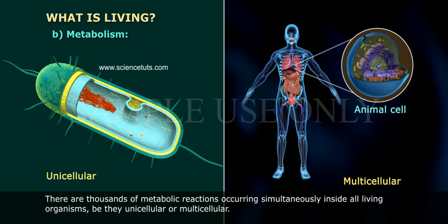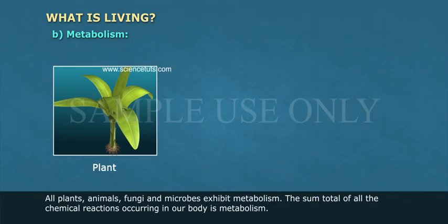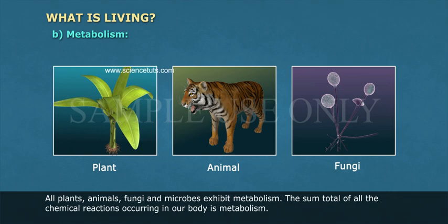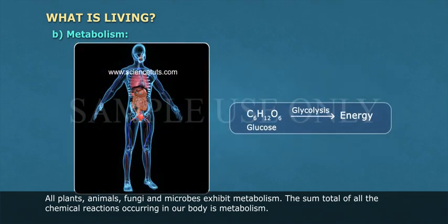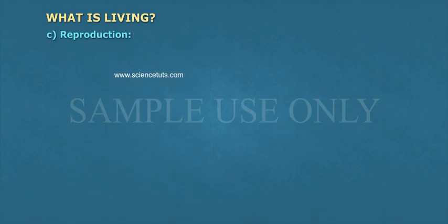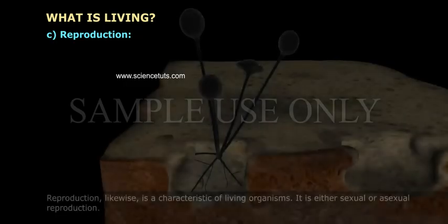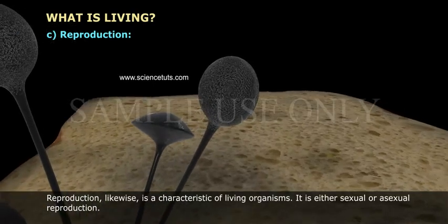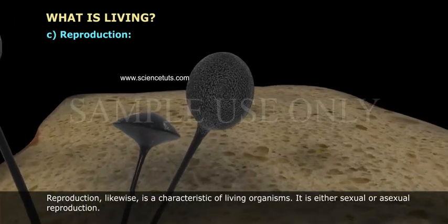Metabolism: there are thousands of metabolic reactions occurring simultaneously inside all living organisms, be they unicellular or multicellular. All plants, animals, fungi, and microbes exhibit metabolism. The sum total of all the chemical reactions occurring in our body is metabolism.